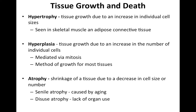Hyperplasia is tissue growth due to an increase in the number of cells — this is due to mitosis. Usually when you're looking at tissue growth in most of the body, this is how tissues will grow in size. Atrophy is when you have shrinkage of a tissue due to a decrease in the size or number of cells. Senile atrophy is a shrinkage of tissue caused by aging, and disuse atrophy is when you don't use an organ, so it atrophies because it is not being used.